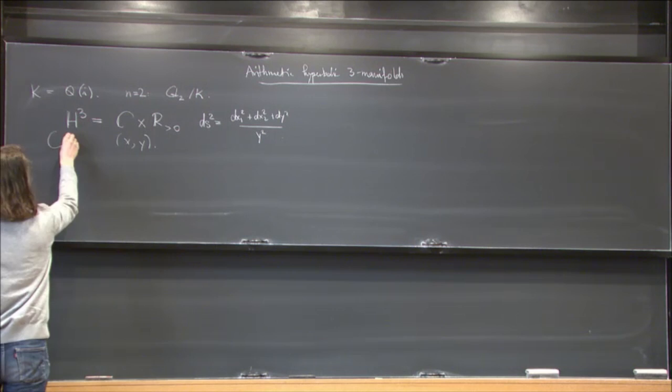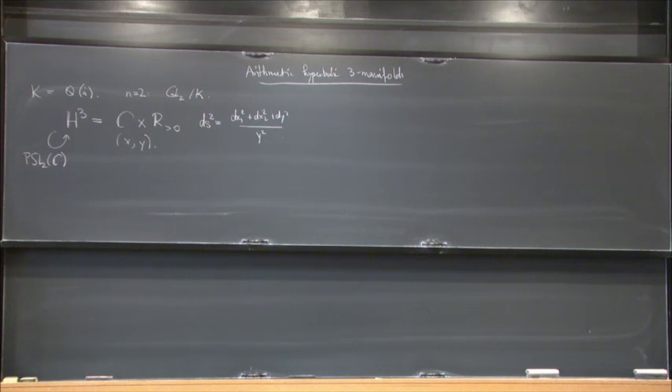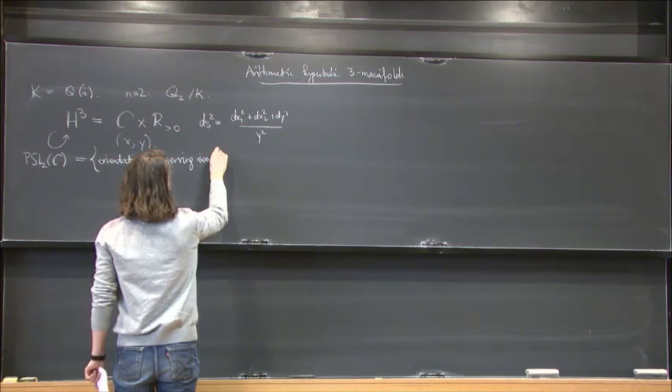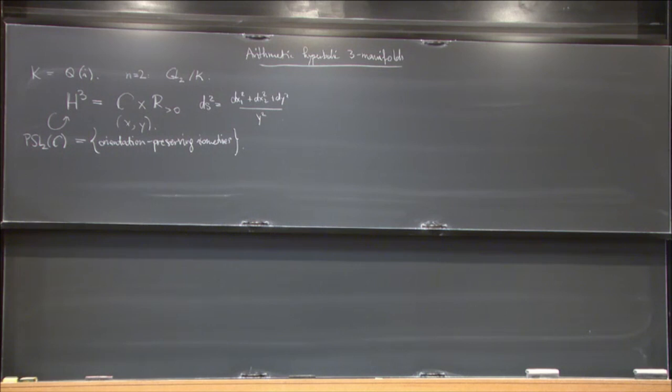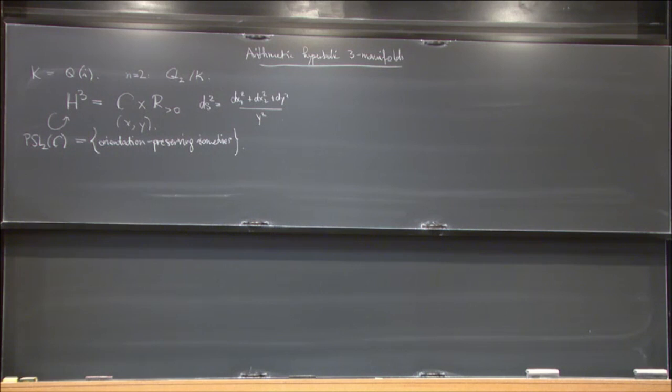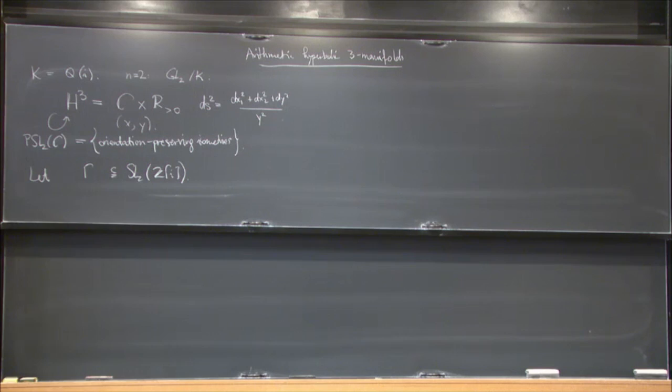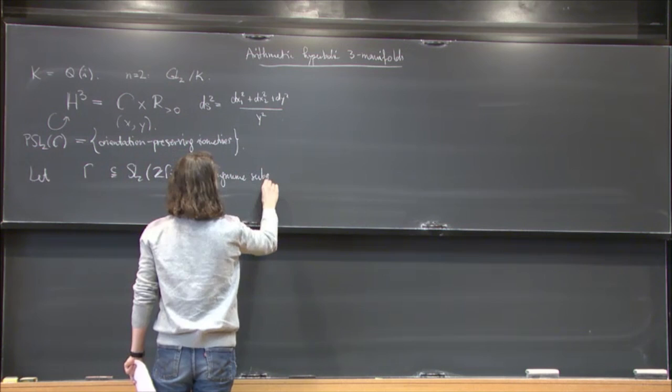And one can check that the group of isometries is isomorphic to PSL2 of the complex numbers. So that's a group of orientation-preserving isometries. And so we can play the same game as for GL2 over Q. So we take inside SL2 of the ring of integers in k, a congruent subgroup.